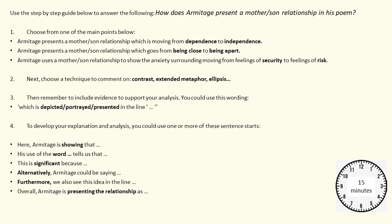Now use the step-by-step guide to answer the question: How does Armitage present a mother-son relationship in his poem? Choose one of the main points: Armitage presents a mother-son relationship which moves from dependence to independence; or which goes from being close to being apart; or he uses the relationship to show the anxiety surrounding moving from feelings of security to feelings of risk. Next, choose a technique to comment on — contrast, extended metaphor, ellipsis, or another one. Then include evidence to support your analysis. You could use wording such as 'which is depicted, portrayed or presented in this line.' To develop your explanation, use sentence starters such as: 'Here, Armitage is showing that...', 'His use of the word tells us that...', 'This is significant because...', 'Alternatively, Armitage could be saying...', 'Furthermore, we could see this idea in the line...', or 'Overall, Armitage is presenting the relationship as...' Pause the video for 15 minutes to do this now.